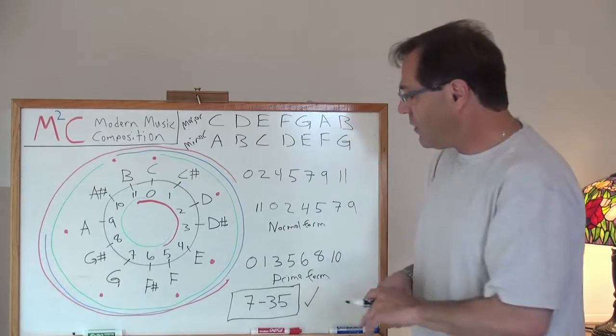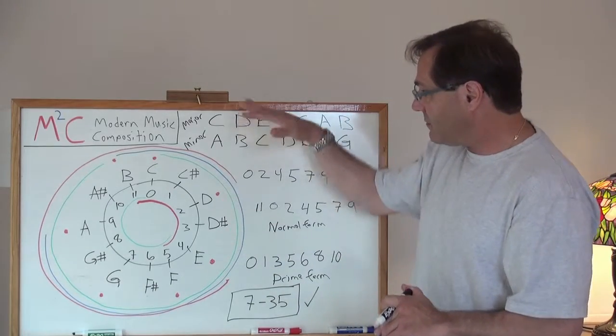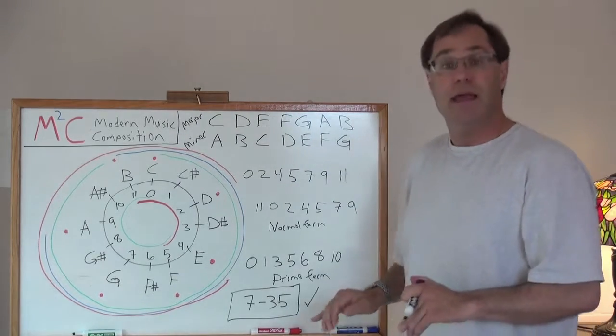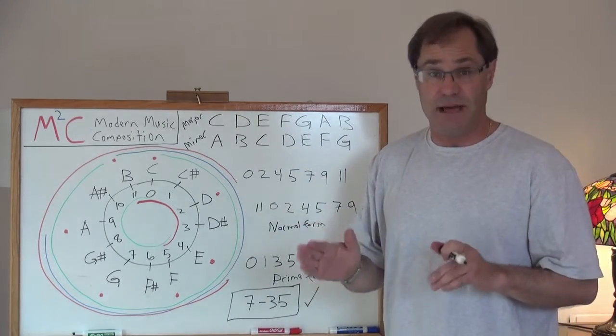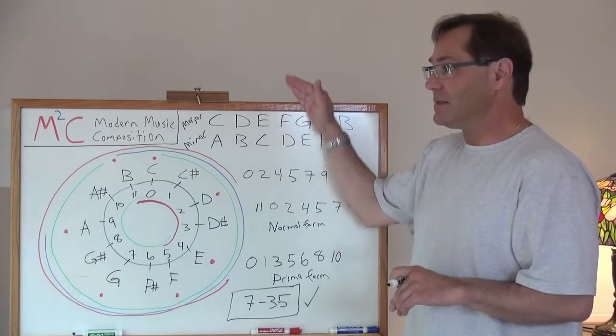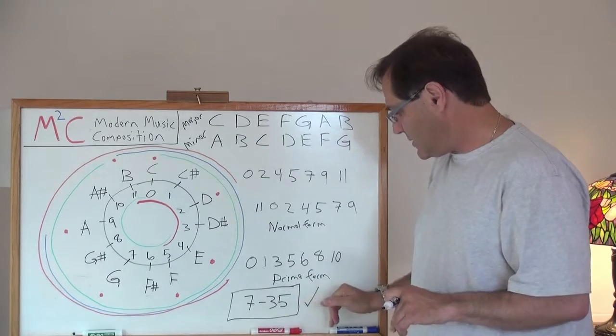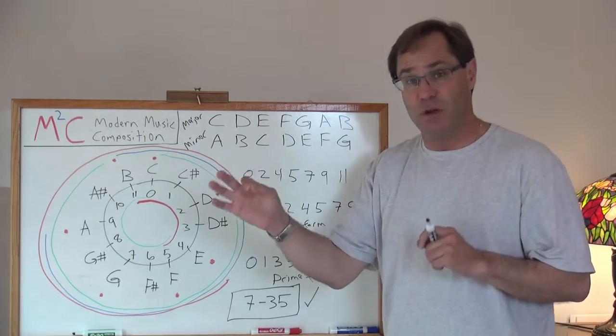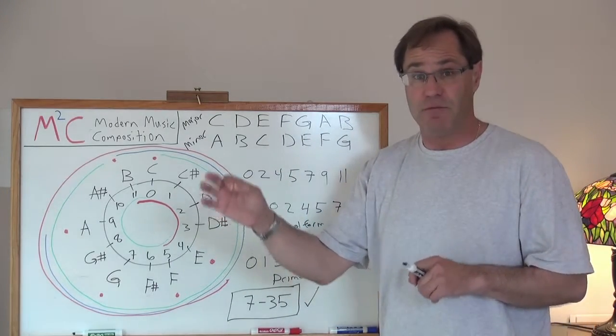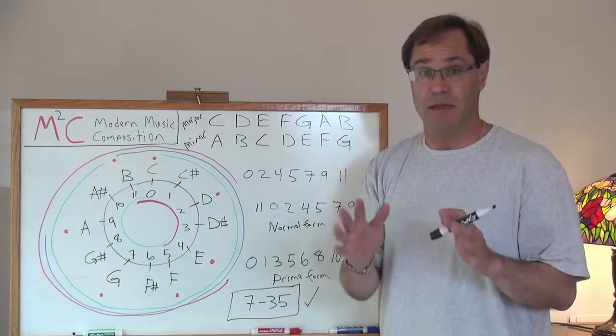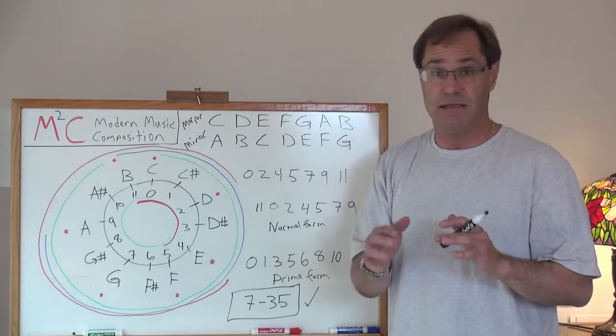But lo and behold, there you have it. 7-35 is the set class for the diatonic scale. So that means all those modes that I showed you before fall into this same set class. Even though each one of those modes sound slightly different from the other mode, they're very similar to one another. And that's a really important concept to understand in set theory.